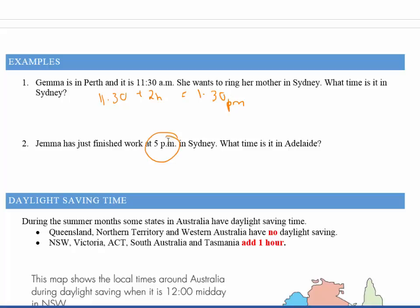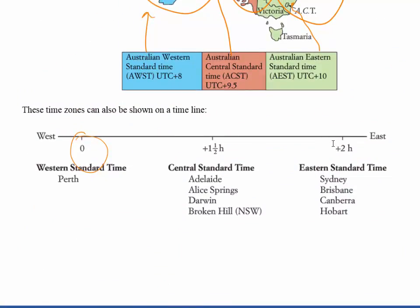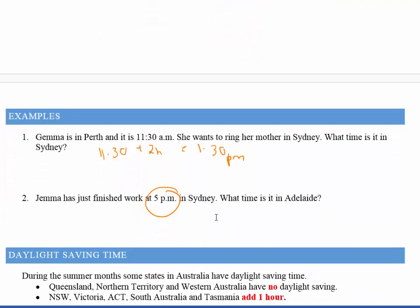Gemma has just finished work — it's 5 p.m. in Sydney. What is the time in Adelaide? The difference between Sydney and Adelaide is half an hour, and we're going in the westerly direction so we're subtracting time. If we take 5 p.m. and subtract half an hour, that's 4:30 p.m. in Adelaide.